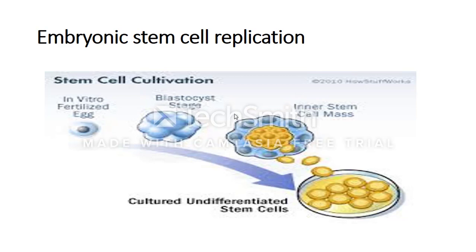Adult stem cells are actually more differentiated than embryonic stem cells. An interesting vocabulary term here is a progenitor cell, which simply means it is slightly more differentiated than an embryonic stem cell. This means an adult stem cell cannot move back into an embryonic stem cell, but an embryonic stem cell can move to an adult stem cell, simply because the adult stem cell is more differentiated.